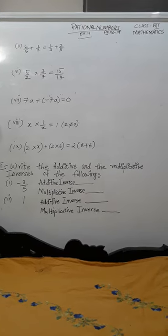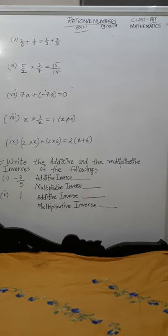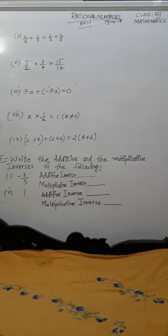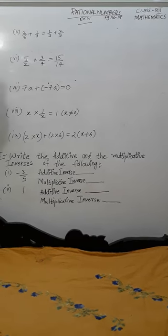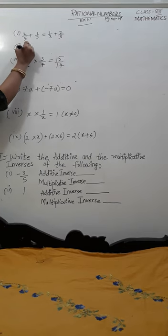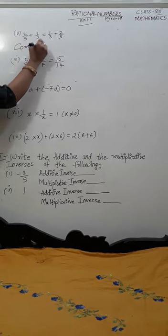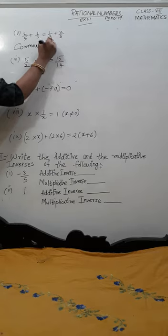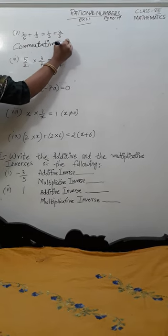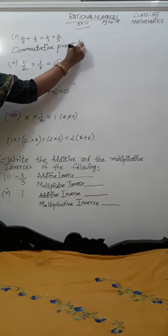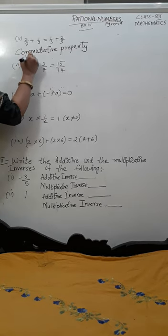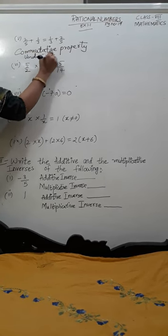2 by 5 plus 1 by 3 is equal to 1 by 3 plus 2 by 5. Which property is involved in this? Commutative property under addition.